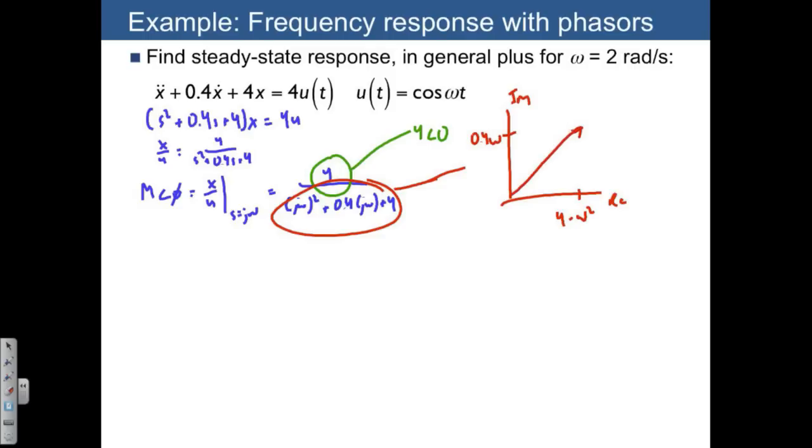If we actually try to evaluate the magnitude of that, that's going to be square root of 4 minus omega squared squared plus 0.4 omega squared. The angle of this is the arctangent of 0.4 omega divided by 4 minus omega squared.